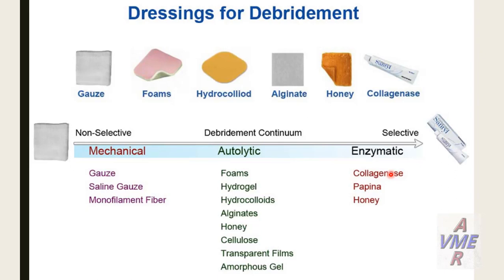Now we will discuss some types of dressing — not the focus today, but brief notes on different types. First, dressings that cause mechanical effects like gauze, cyan gauze, and monofilament fiber. Dressings that cause autolytic effects include foams, hydrogel, hydrocolloid, alginate, honey, cellulose, transparent film, and amorphous gel. Dressings that form enzymatic effects include collagenase, papain, and honey.